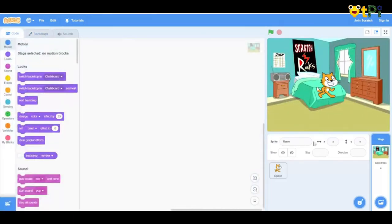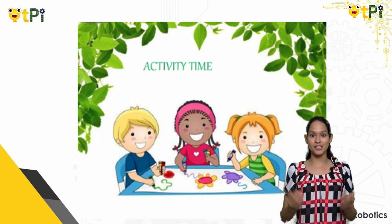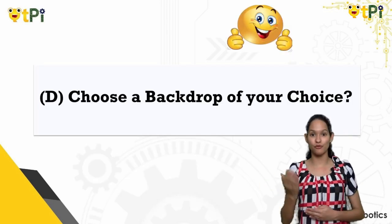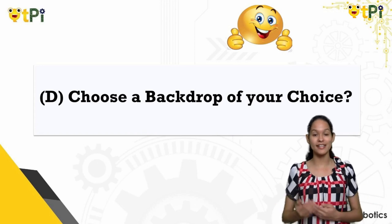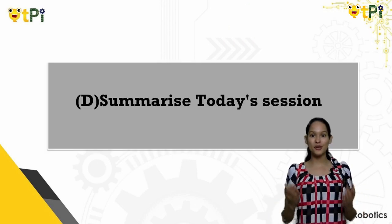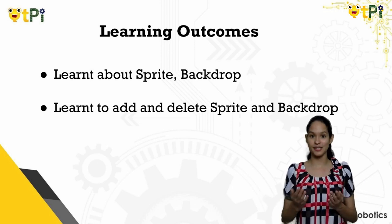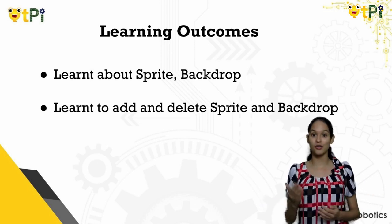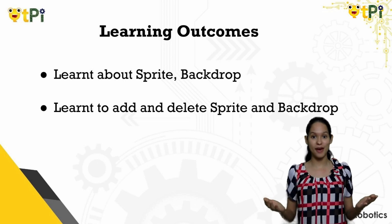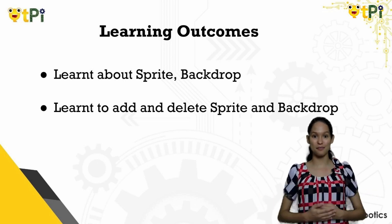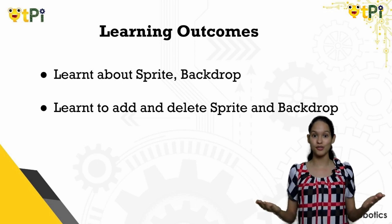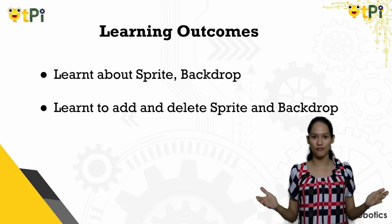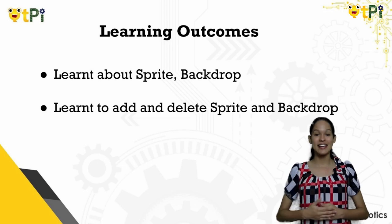Here's another activity — go ahead and add a backdrop of your choice onto the screen. You can pause the video but do come back quickly so we can have a short summary. In this video, we learnt what is a sprite and what is a backdrop. We also saw how to add and delete a sprite and backdrop. Here's a simple assignment: I would like you to add two sprites onto your stage and also change the backdrop. It's really simple and a lot of fun, so go ahead and try it. That's it for this session — see you in the next one.